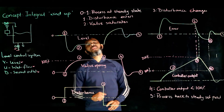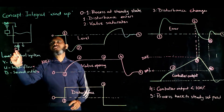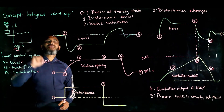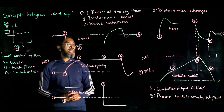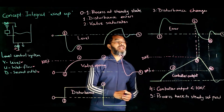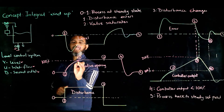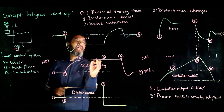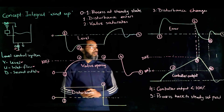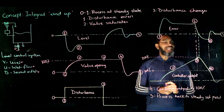In this scenario, the disturbance has a magnitude such that even at 100% valve opening, the level cannot be maintained at the desired value. The controller calculates a valve opening beyond 100%, but when it reaches 100% the valve saturates and cannot move further — it remains at 100%. However, due to persistent error, the integral action keeps accumulating.